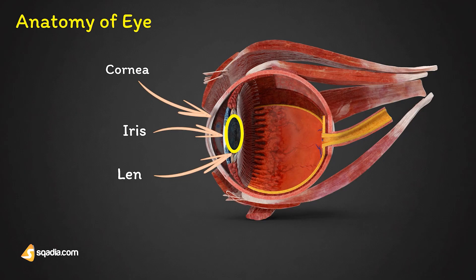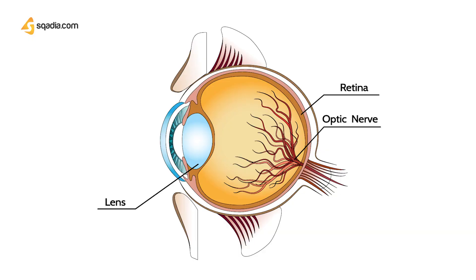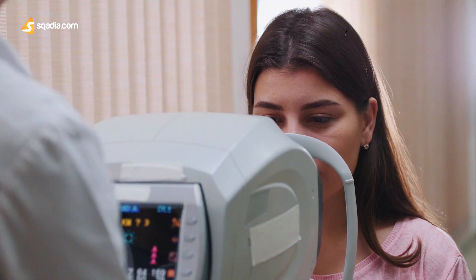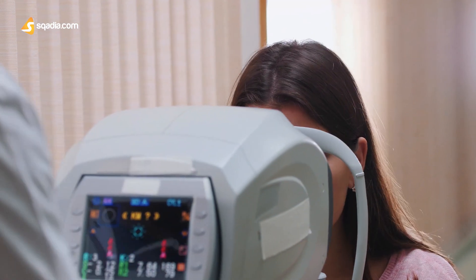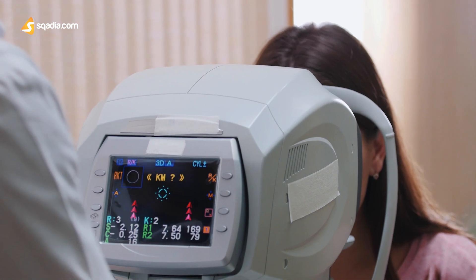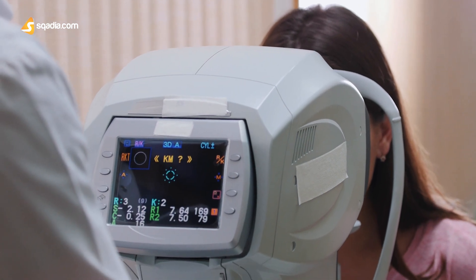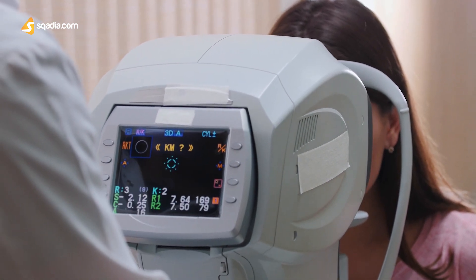The light then passes through the pupil to fall onto the lens. The lens is the most important part of animal eyes — it is a nearly transparent biconvex structure suspended behind the iris, whose sole function is to focus light rays onto the retina. The level of visual acuity is defined by the lens, and it varies from animal to animal.